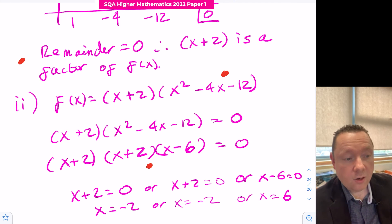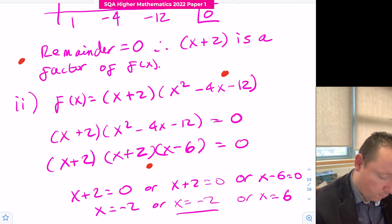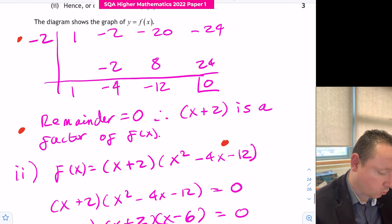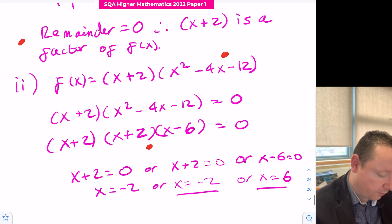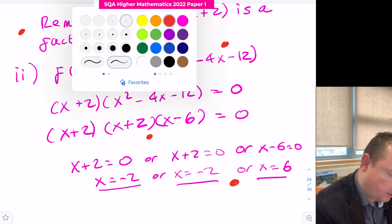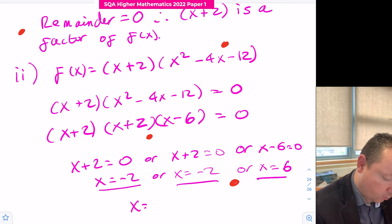We get our final solution of minus 2 and 6. Since it's a repeated factor, we could just say that x equals minus 2 or x equals 6, just to be clear.